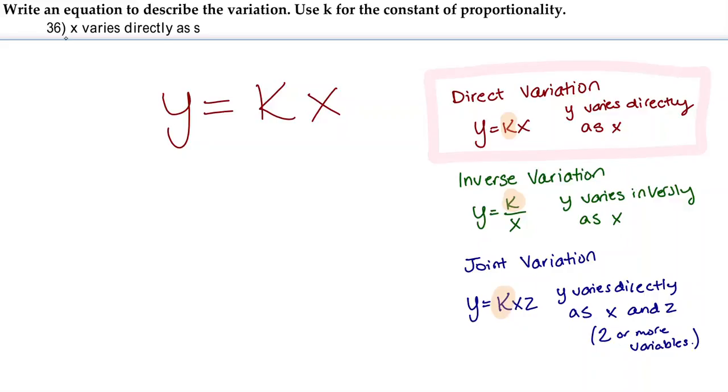So here, since x varies directly as s, x is going to be what our y is in this problem. And it's going to be equal to k times something. And that something is going to be this s. So the equation to describe the variation for number 36 is going to be x equals ks.